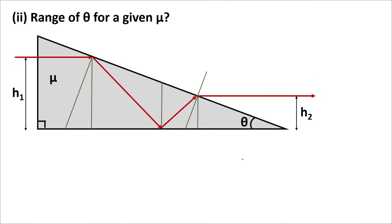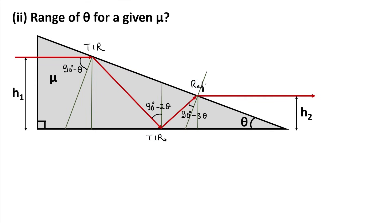Now we have to find the range of theta for a given mu. Writing the important angles again: this angle was 90 minus theta, this angle was 2 theta, so this angle is 90 minus 2 theta, and this angle was 3 theta, so this angle is 90 minus 3 theta. TIR was taking place at the first surface, TIR was taking place at the second surface, and refraction was taking place at the exit surface.